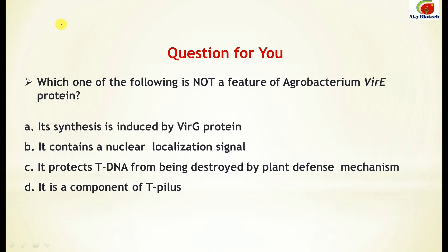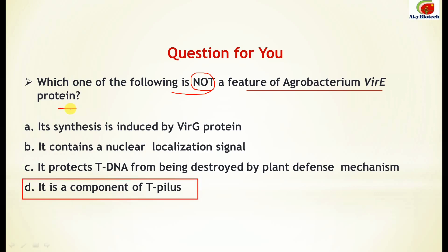In the previous video we put a question for you — which one of the following is not a feature of Agrobacterium VirE protein? You had four options, and the correct option is D: it is not a component of T-pilus — that is VirB2 which forms the T-pilus. Many people answered this question correctly and we received many correct answers.